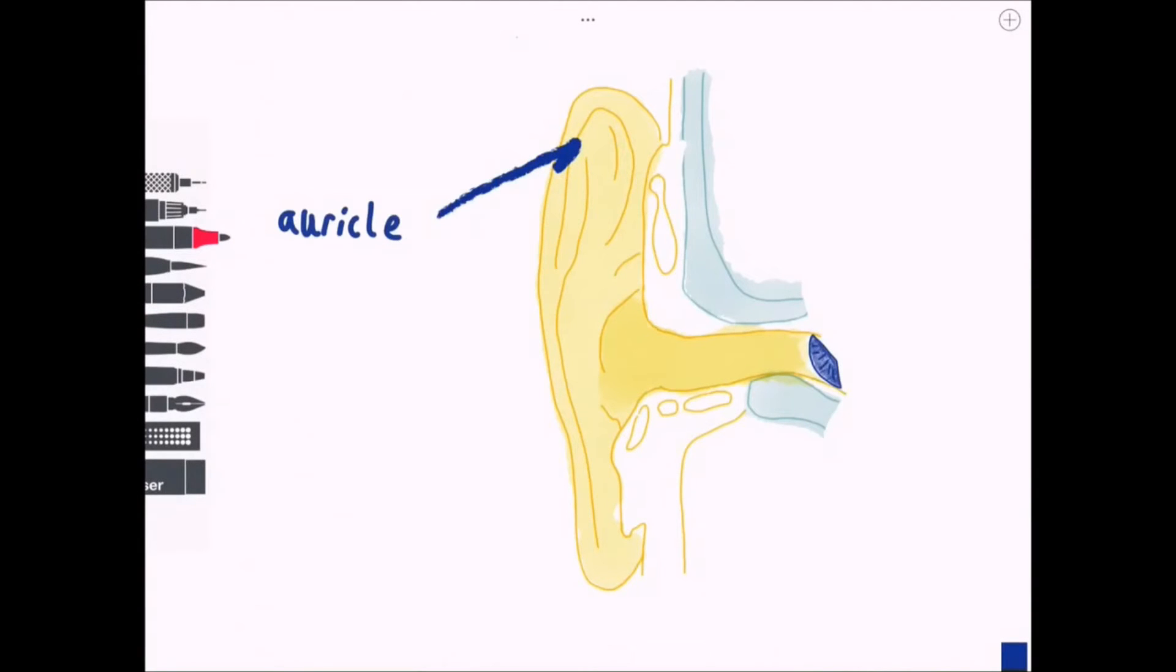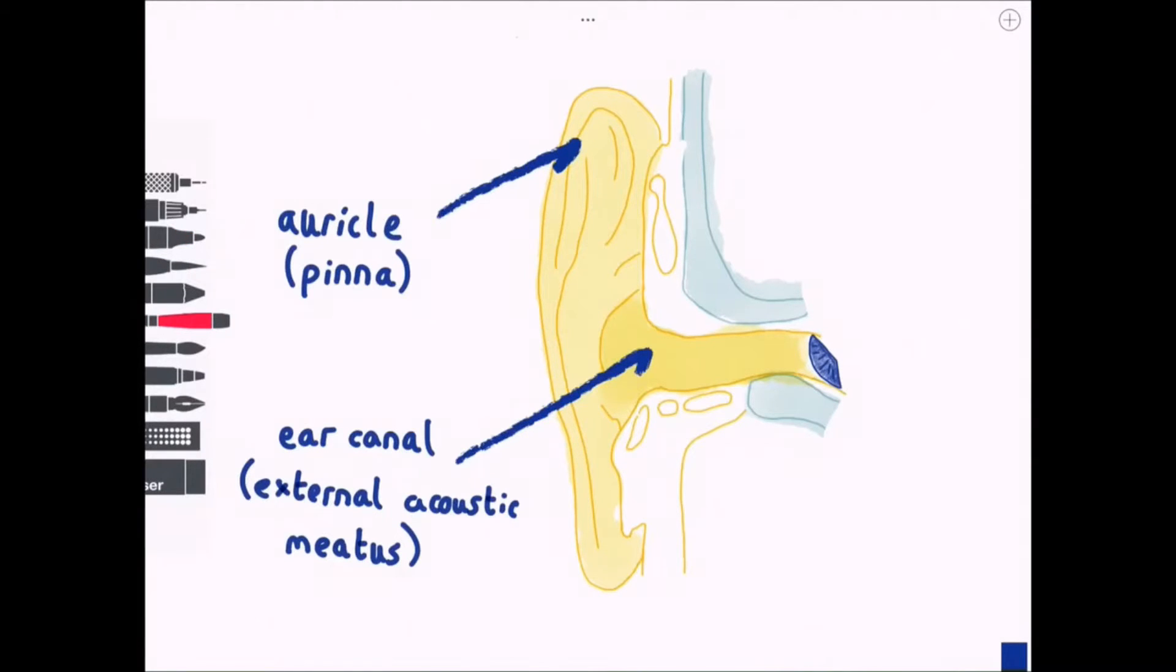Let's start with the external ear, the bit that you can see. This includes the auricle or pinna which is made of elastic cartilage as well as the ear canal or external acoustic meatus which is the little hole and tunnel that you put your headphones into.